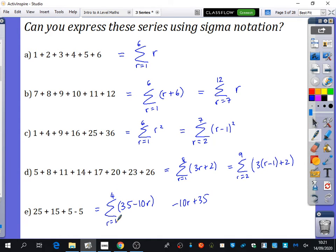And r equals one on the bottom. So I guess just a quick note on how we say this. I would say the sum of 35 minus 10 r from one to four or from r equals one to four. So you say the sum of this bit, and then you give some of that extra information. Really, really good. I'm impressed with those ones you came up with.